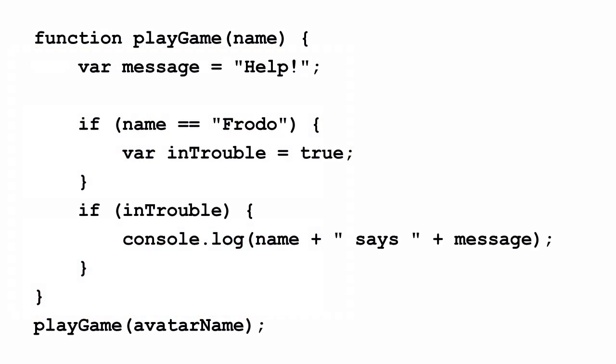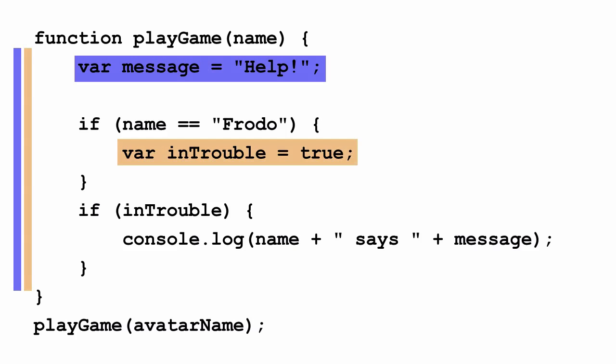Let's take a look at the function play game. Here we've got one parameter and we're declaring a couple of variables within the function. The scope of all the variables defined in the function is local — that includes message, in trouble, and name. Notice that local scope includes the parameters as well. Hoisting also happens within a function: if you declare a variable somewhere other than at the top of the function, that variable is visible throughout the function, but it won't be defined until after the code to initialize its value has been executed.